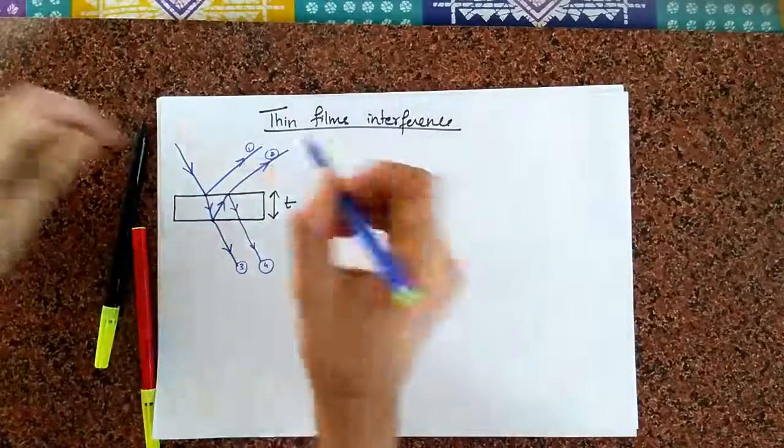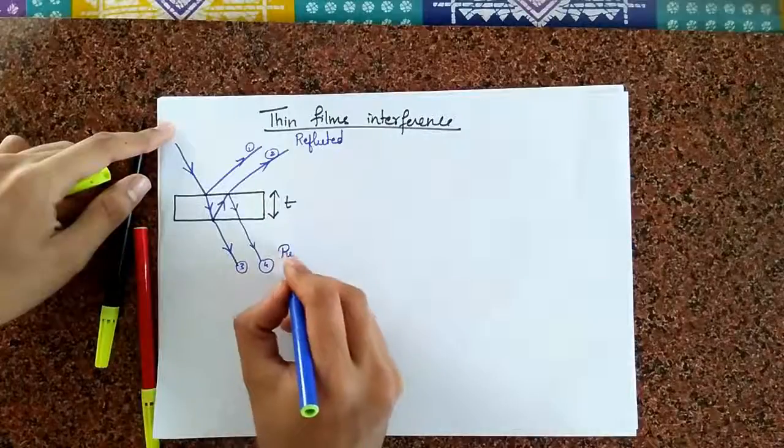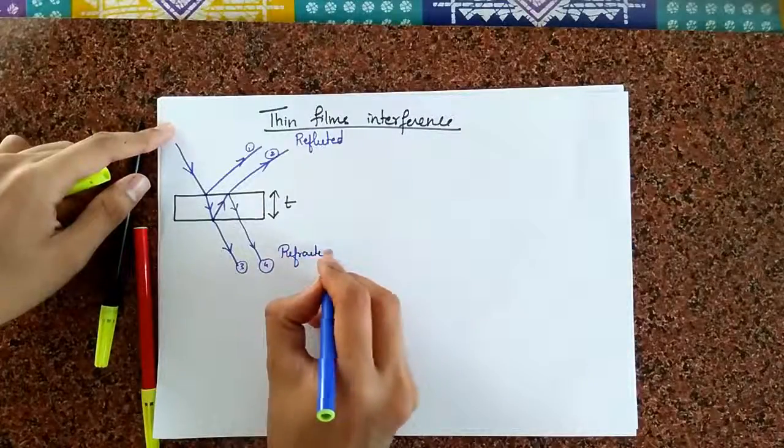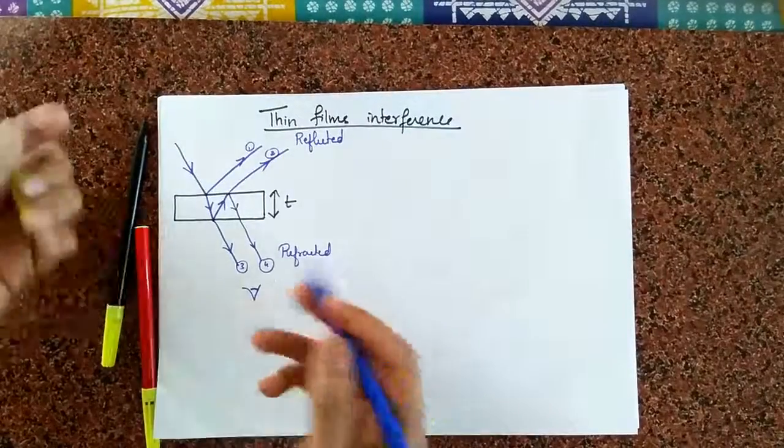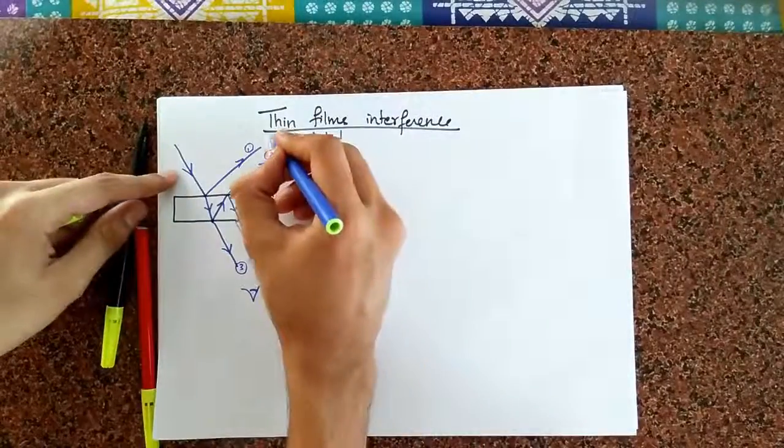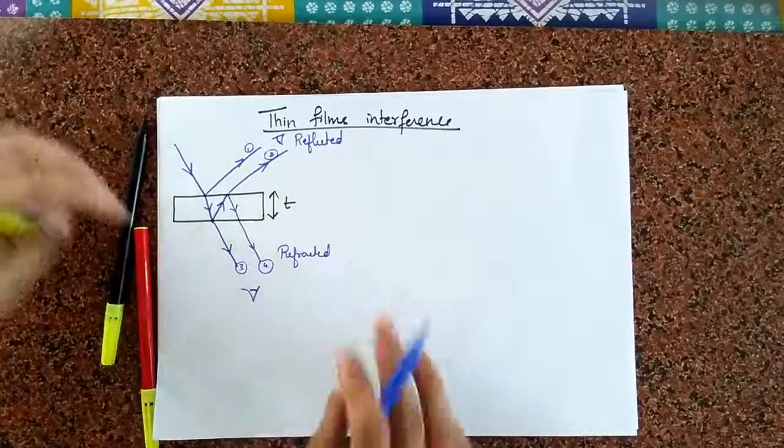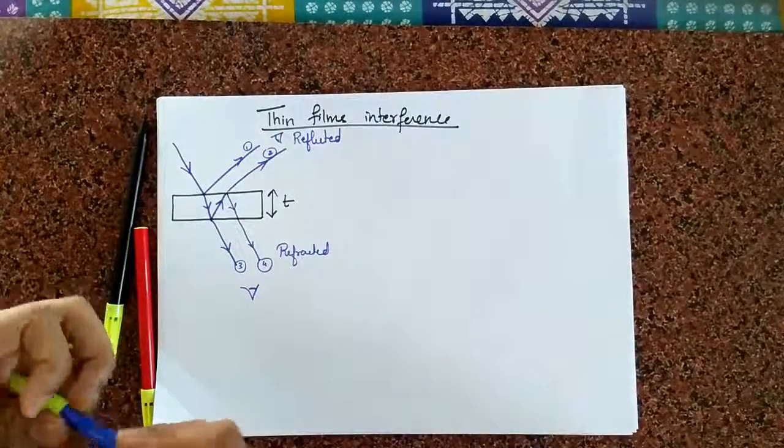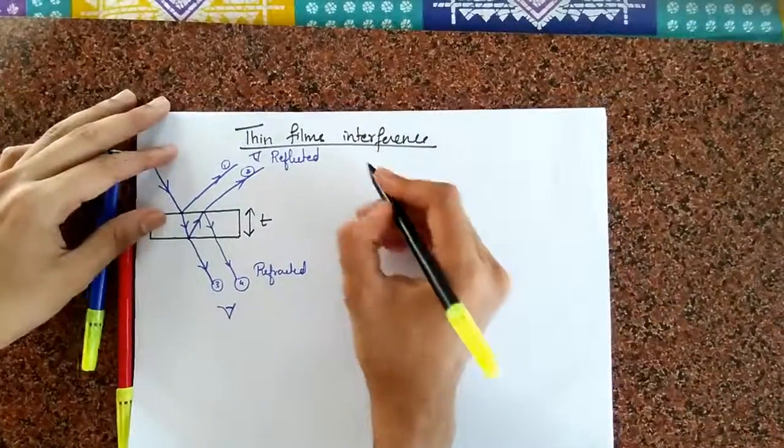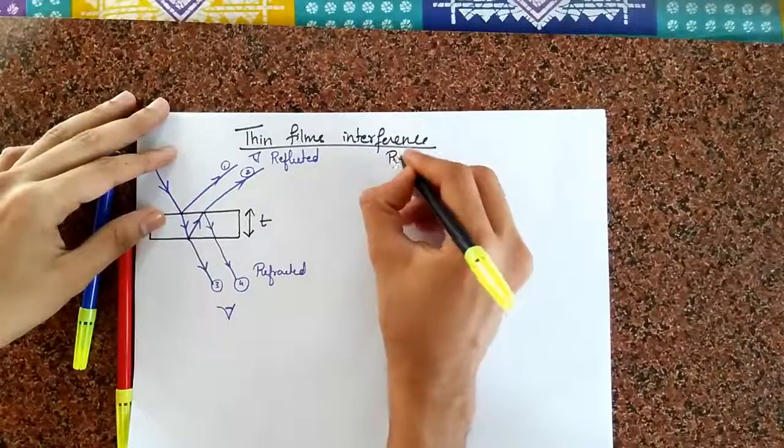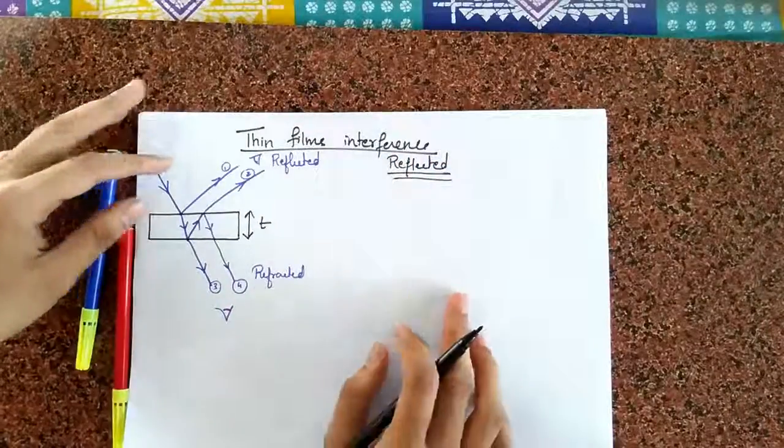So, what we are going to talk about is finding out what are the conditions for constructions, maximas, and minimas for this system. We call this as the reflected system, for obvious reasons, this is the reflected system, and this is the refracted system. So, that depends upon where you are seeing, if your eye is over here, when light comes from there, then you are going to see the refracted system. And if your eye is over here, and the light is coming from there, then you are going to end up seeing the reflected system. And, each one has different cases, it has to be dealt with differently.